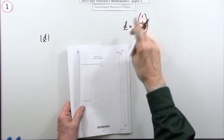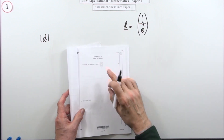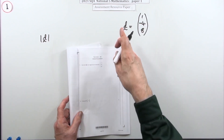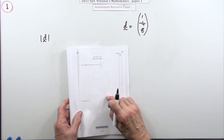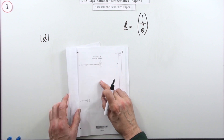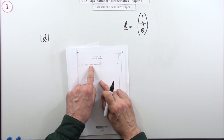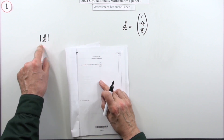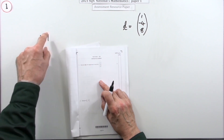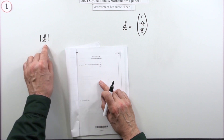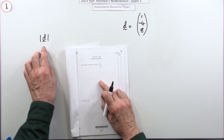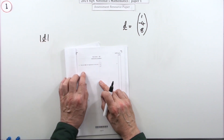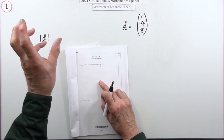Question one from paper one of the 2021 National 5 resource paper — a two-mark question on vectors. Calculate the magnitude; the notation for magnitude is those two lines either side, meaning the absolute value, just the size part.